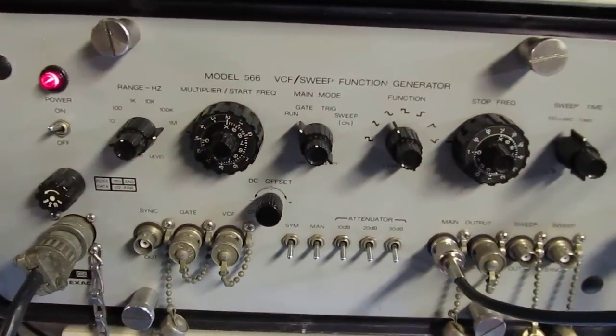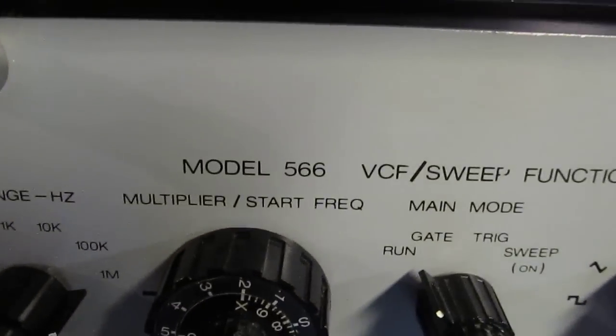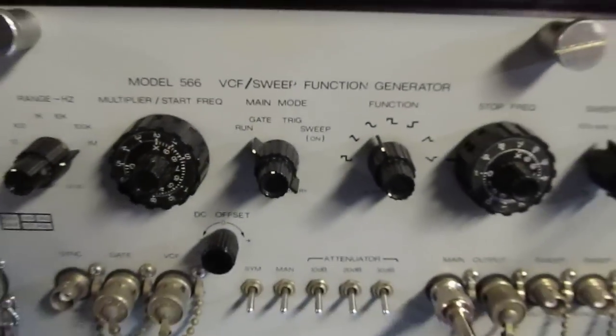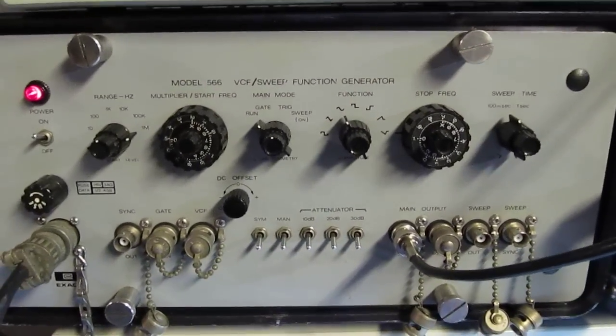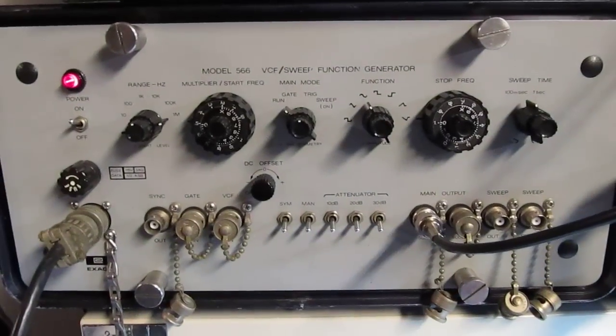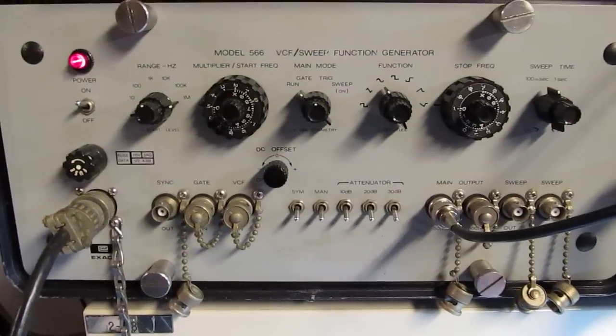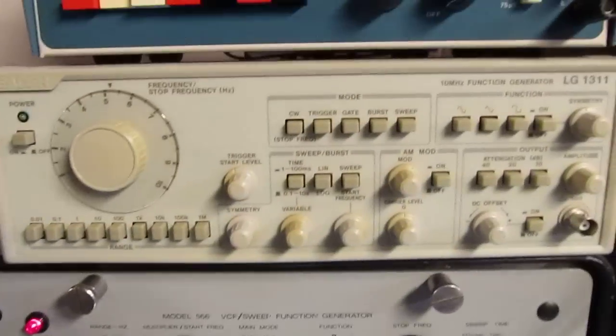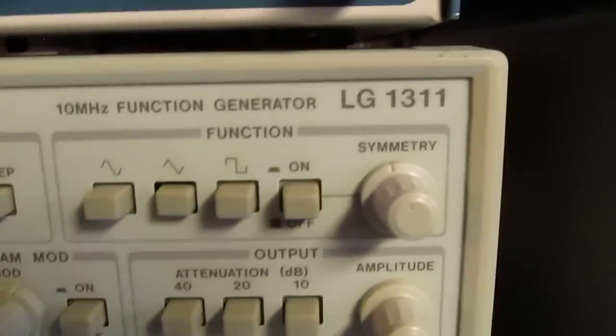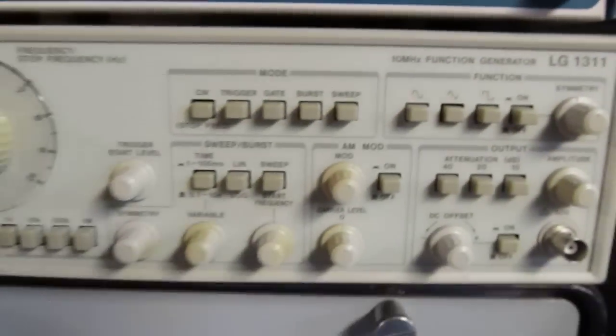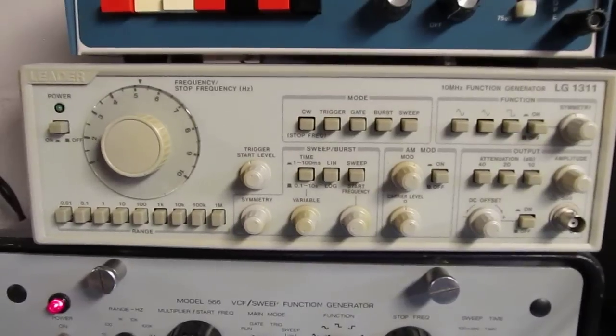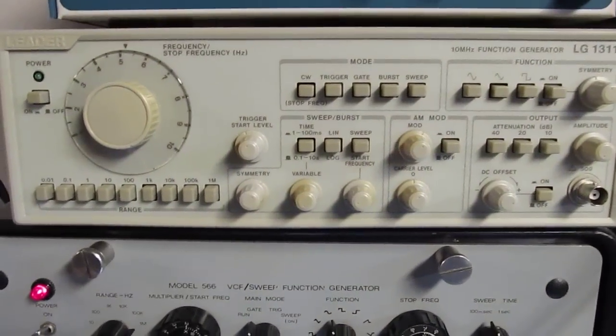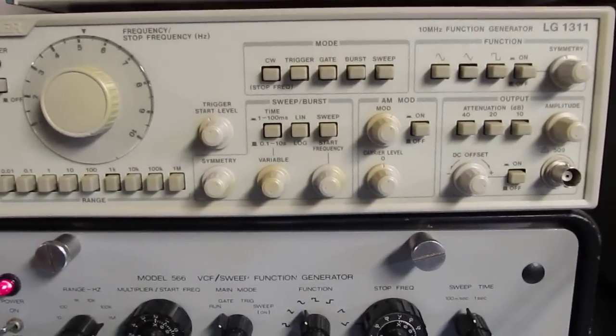This guy here is the Exact model 566 sweep and function generator. I featured this on a video a couple months ago. We did a little tear down, great old school through hole single board type unit here. This is a Leader LG 1311 function generator. Again, nice little box, all analog. If you just want something quick and easy, that works really well.